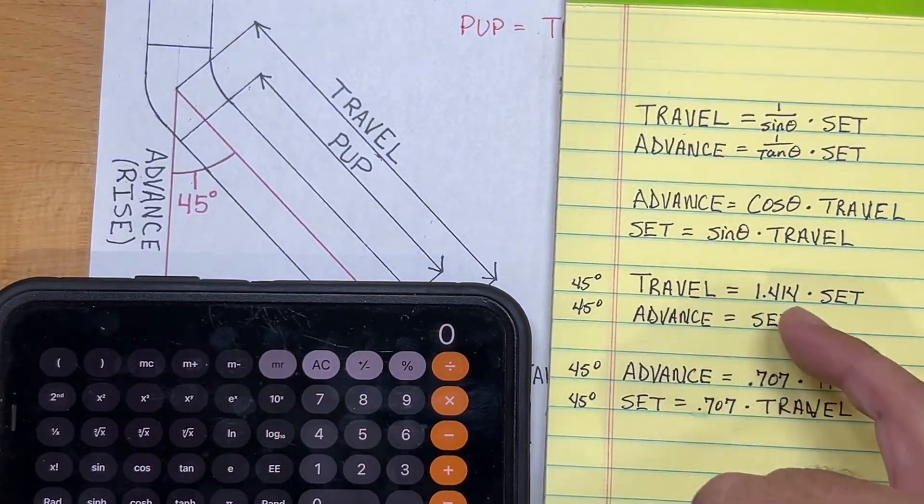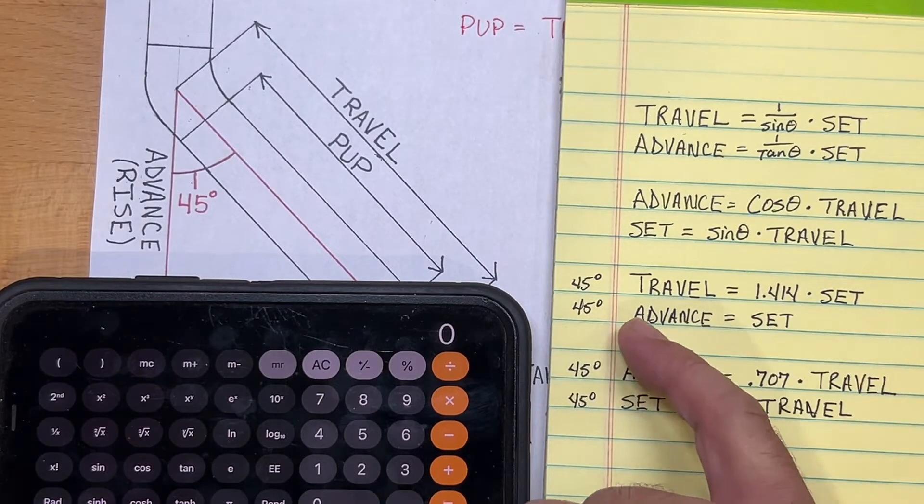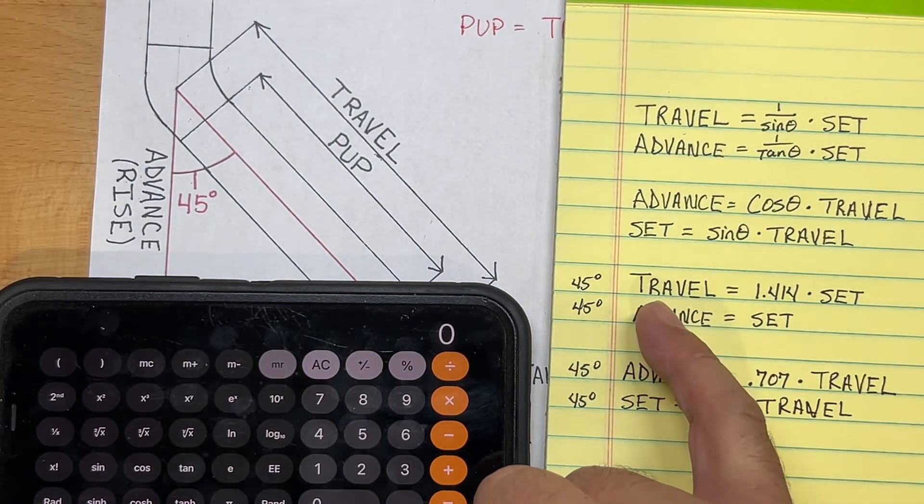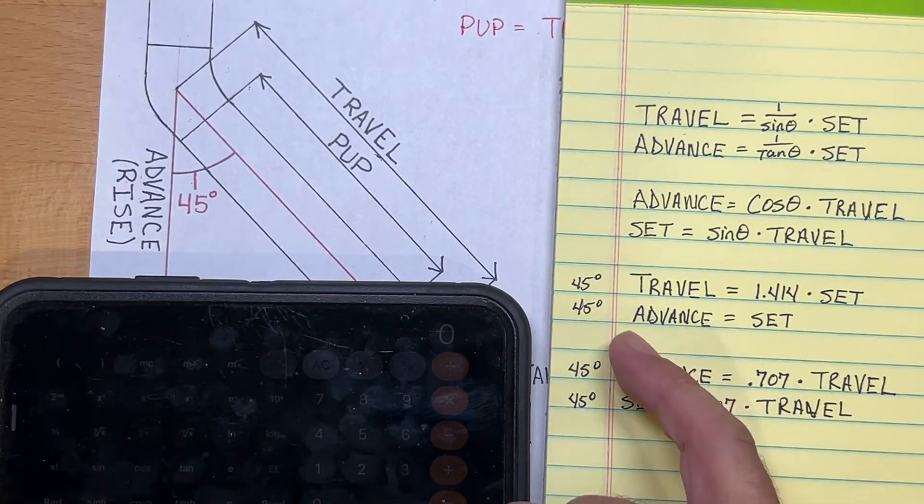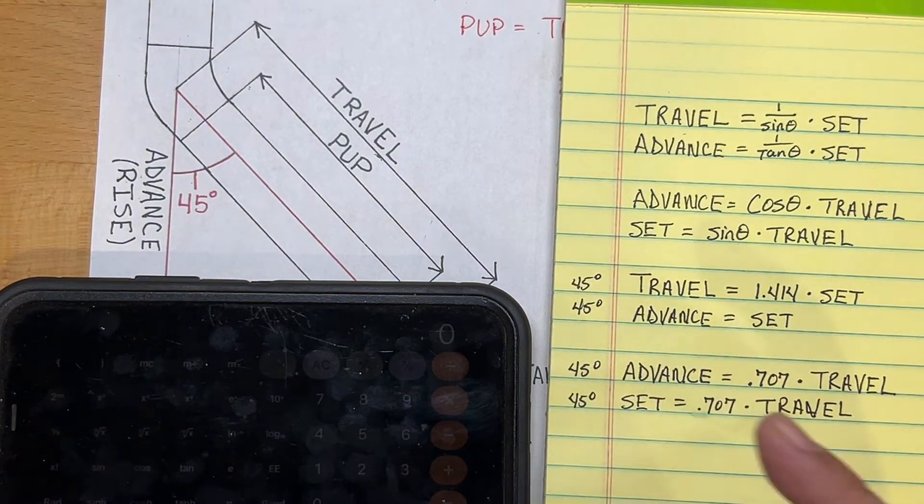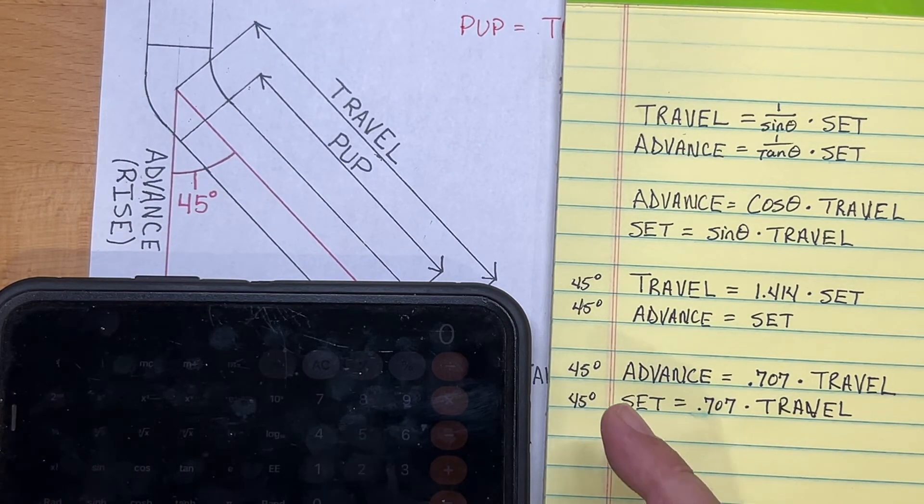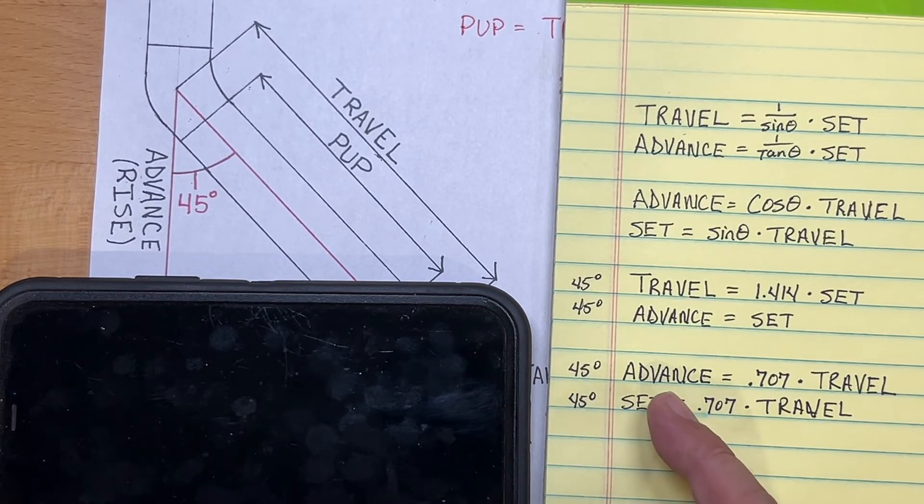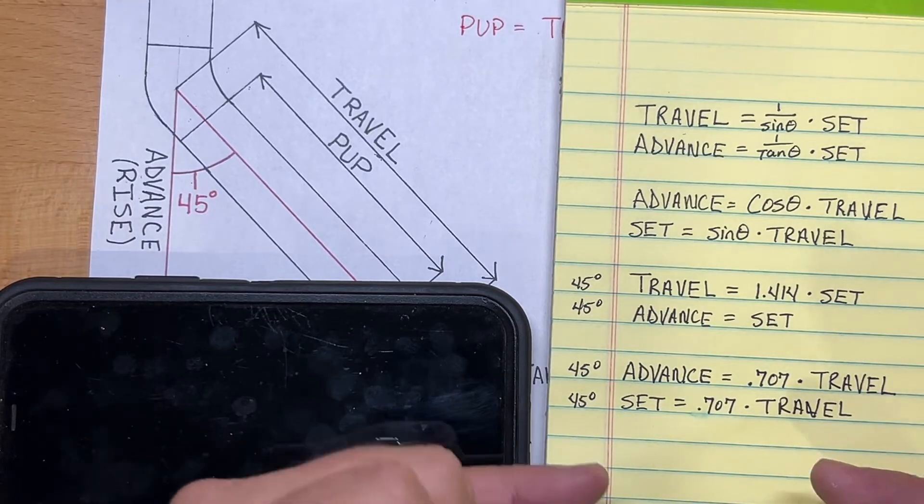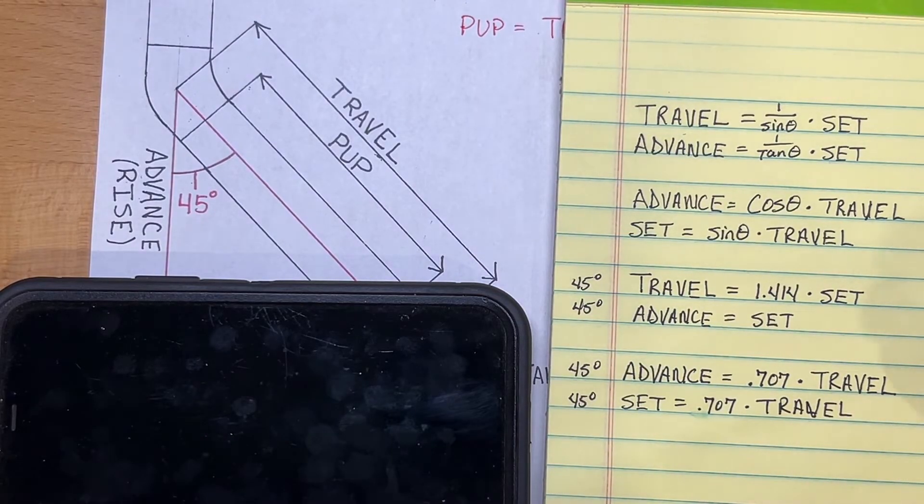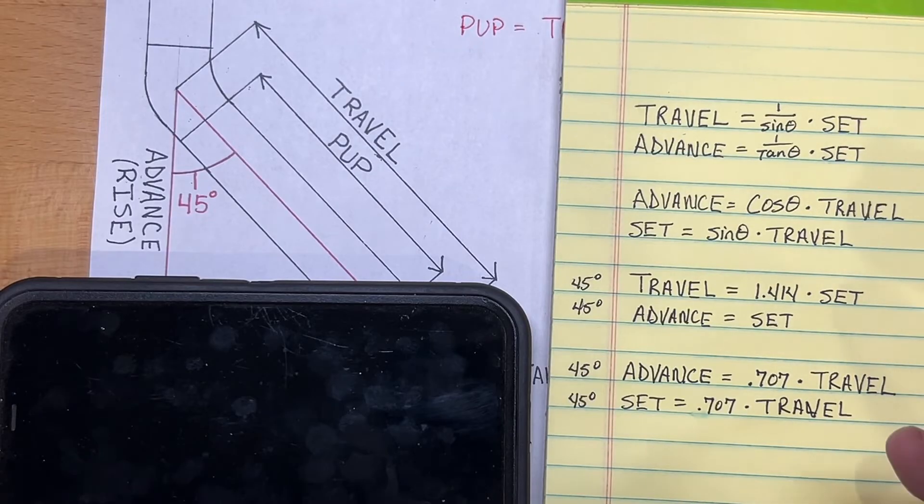Now in a 45, those create what is called your constant. So a little easier to remember this: if you know the set, then your travel will be equal to 1.414 times the set. In a 45, the advance and the set are exactly the same length. And if you know the travel but you're trying to find the advance or the set, then it will be for the advance, it'll be 0.707 times the travel. And because they're equal, it'll be exactly the same for the set. But if you're using a different degree, then those constants change. But these formulas here are how you get the constants for those different degrees.